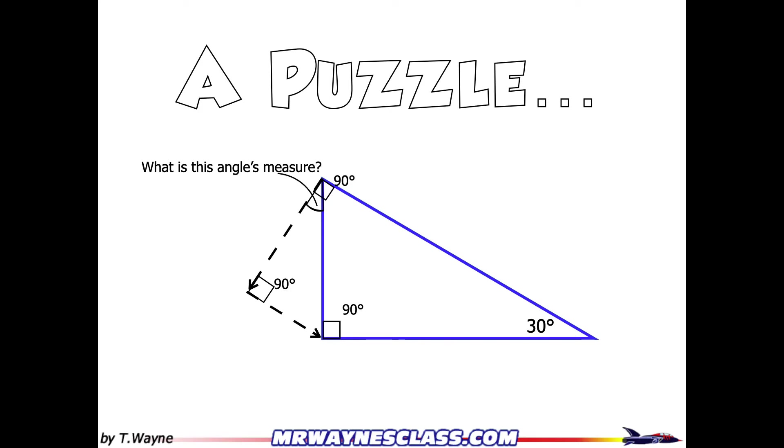Hopefully you stopped the video and found the answer is 30. How did I get that? When I look at the top left-hand corner, that's 90 degrees. Looking at the blue triangle, I can see that I have 90 degrees, 30 degrees, and that unknown angle on the top left.